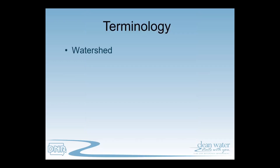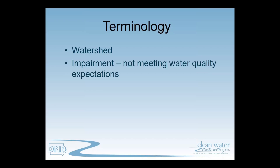The next concept is impairment. An impairment is simply not meeting water quality expectations. We have water quality standards in the state — basically what we expect each water body to attain. For example, in Lake Akwabi we have too much algae, which is not meeting the expectation we have for that lake, so it's considered impaired. That puts it on the impaired waters list, and then our group comes in to figure out what's going on.